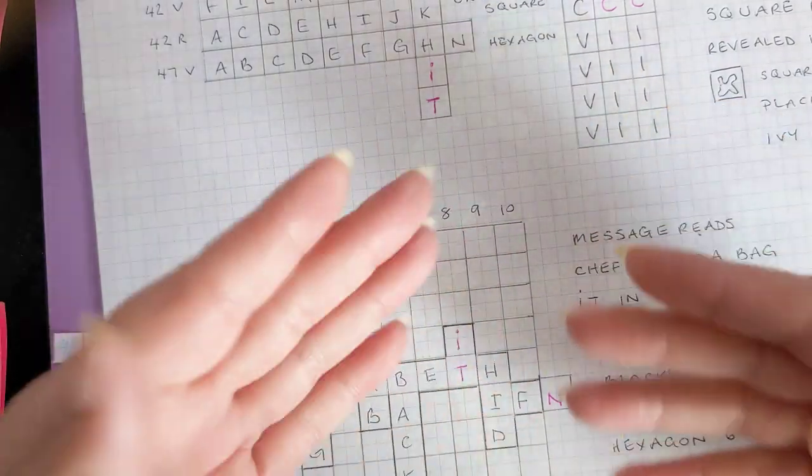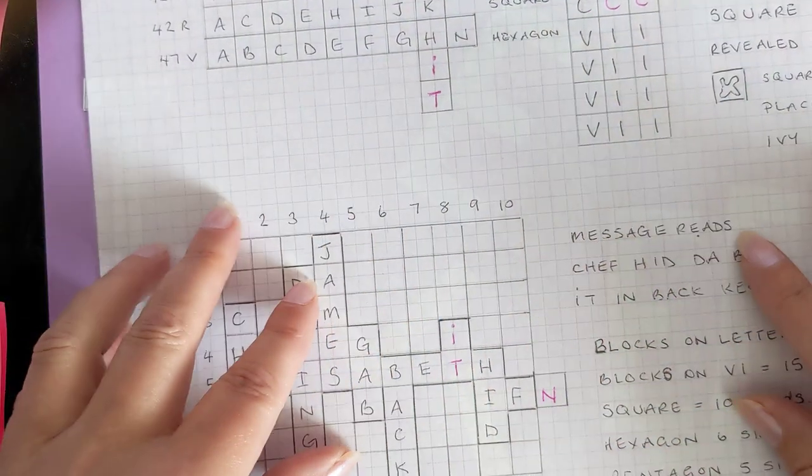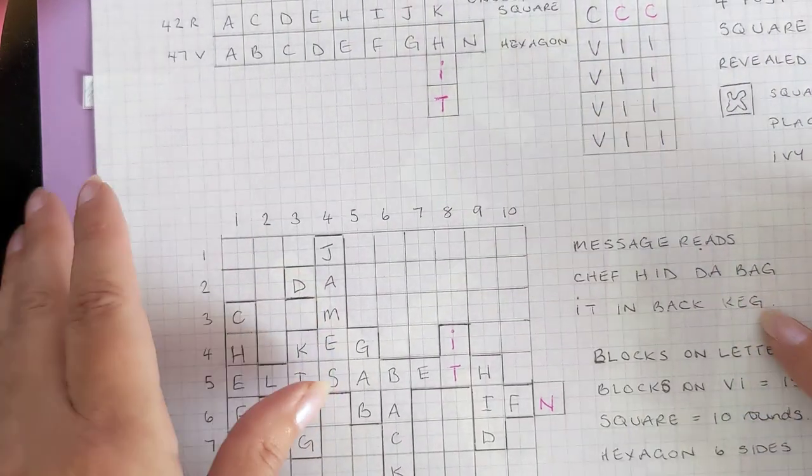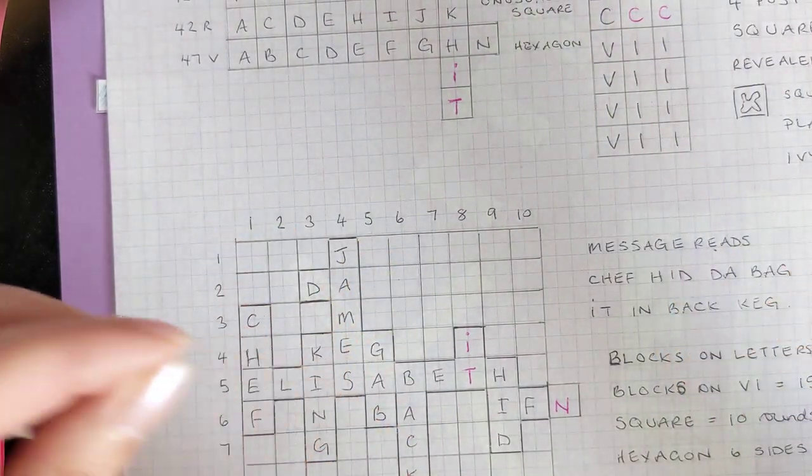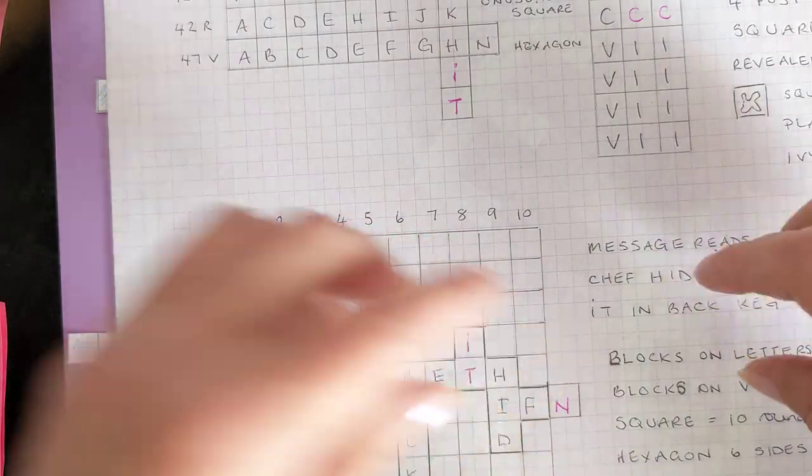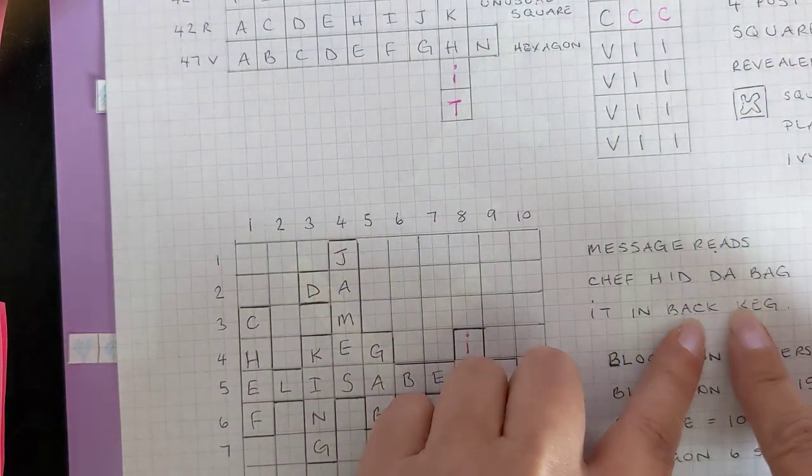That's what they used to call recipes back in the day. The crochet patterns were called recipes. So she's the chef, so she's hidden it. Back keg, if you use this method where you break the letters and rebuild them...